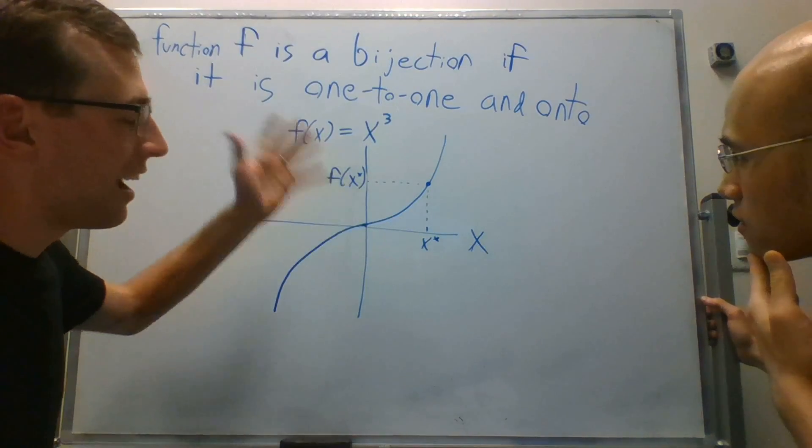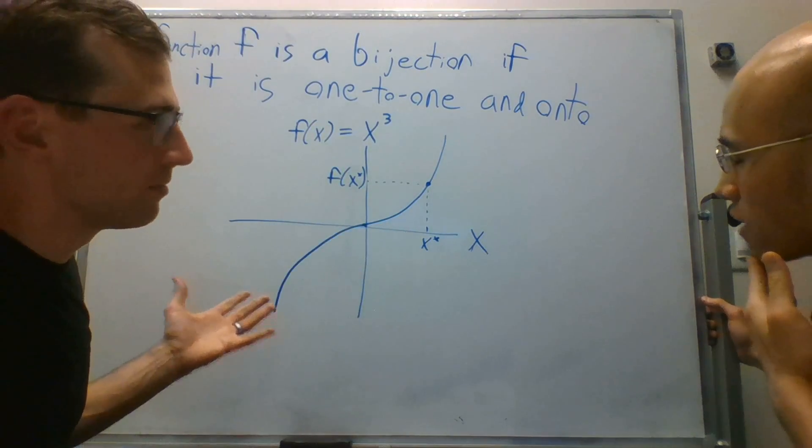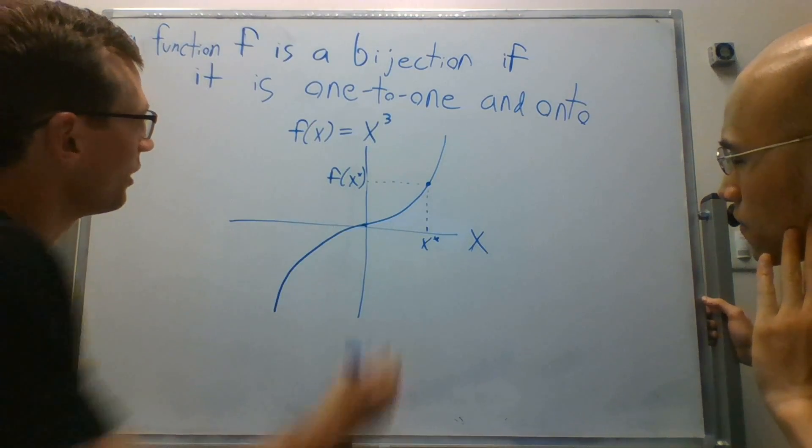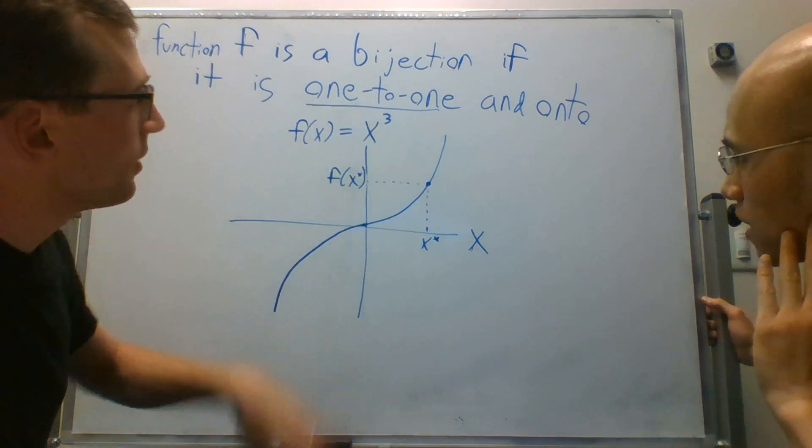So f of a, the a needs to be x star. Yes. The a has to be x star. Okay. So I think we've just, we've got the one-to-one.